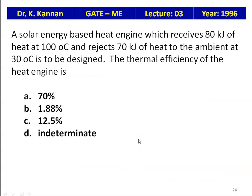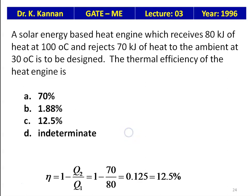A solar energy heat engine receives 80 kJ of heat at 100°C and rejects 70 kJ to the ambient at 30°C. The thermal efficiency = 1 − Q2/Q1 = 1 − 70/80 = 0.125, which is 12.5%. The answer is 12.5%.